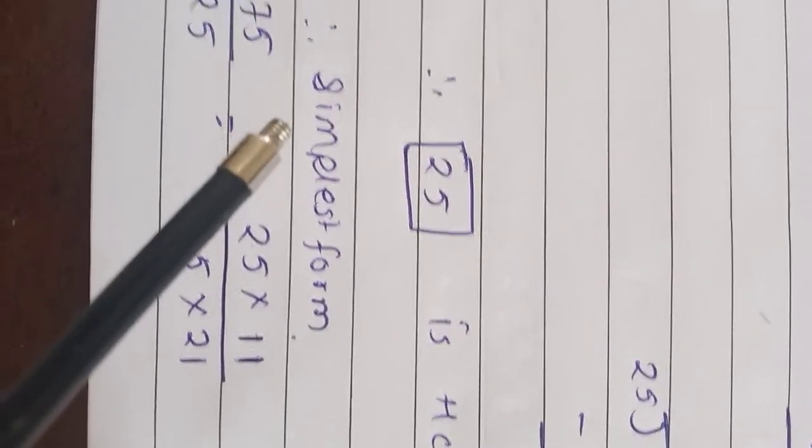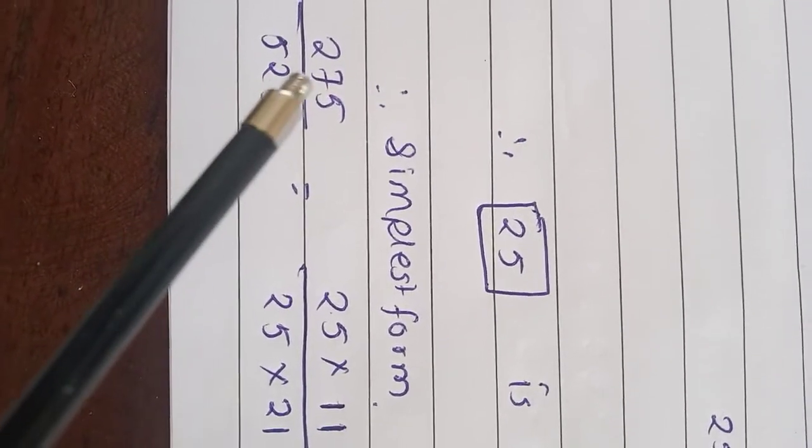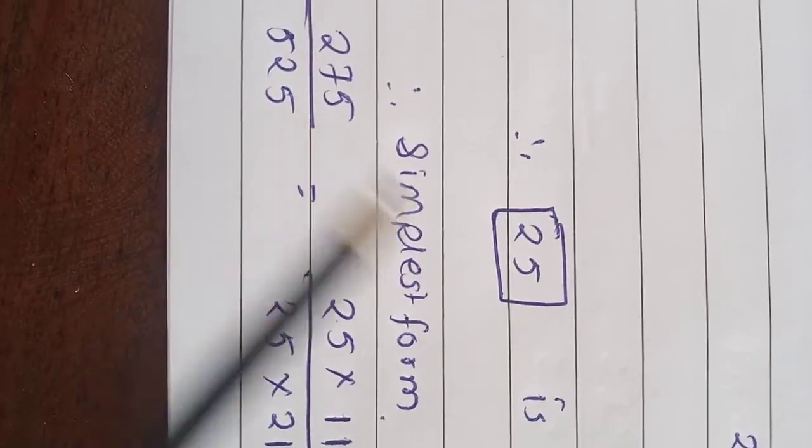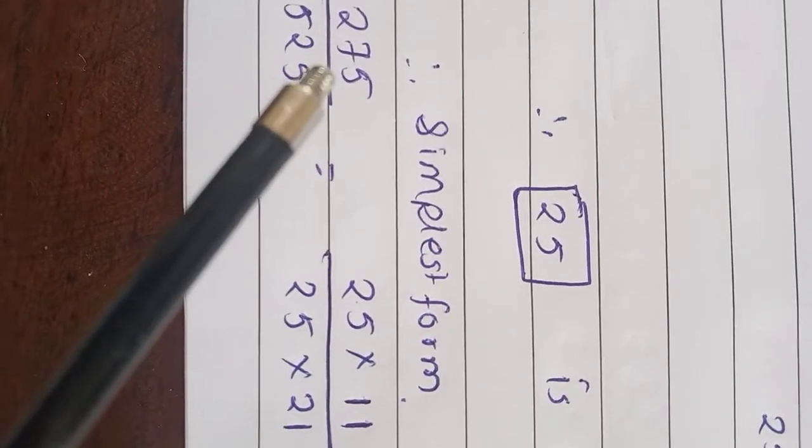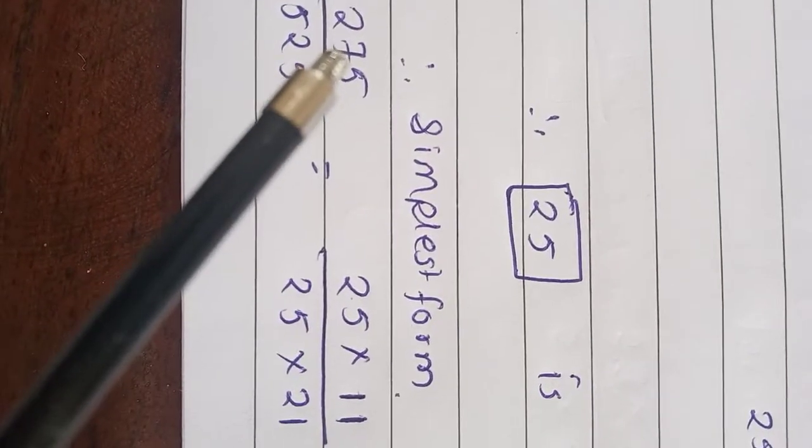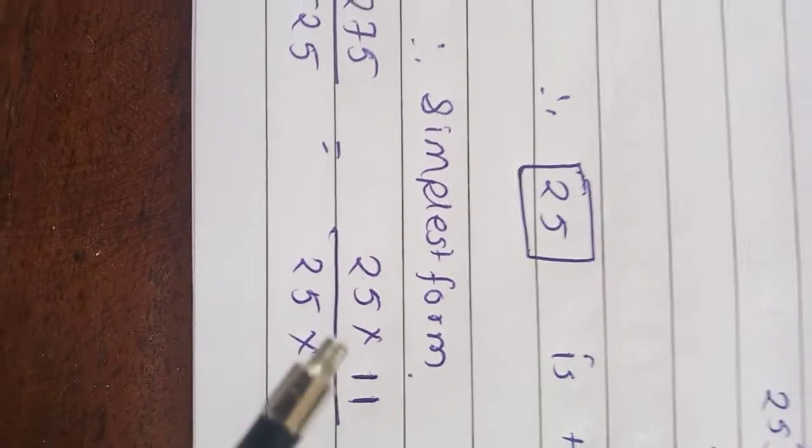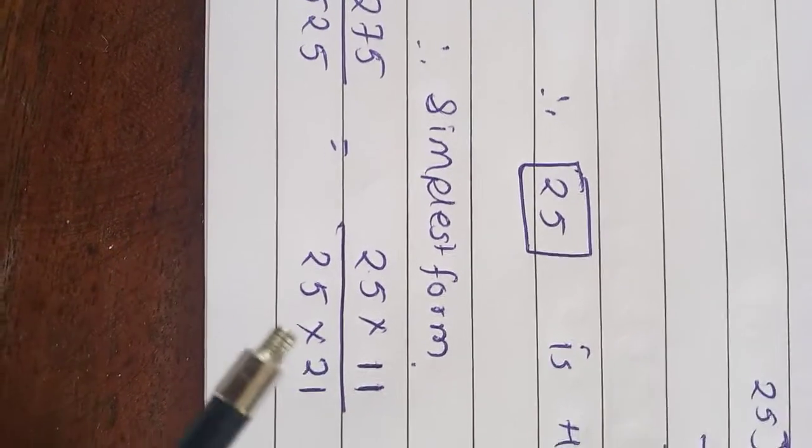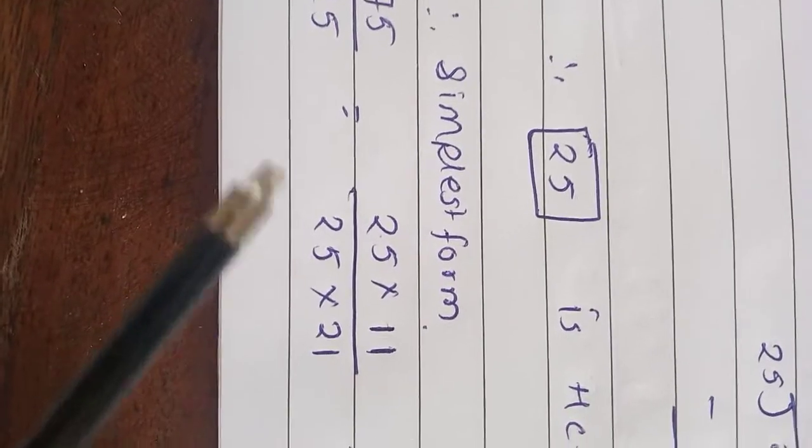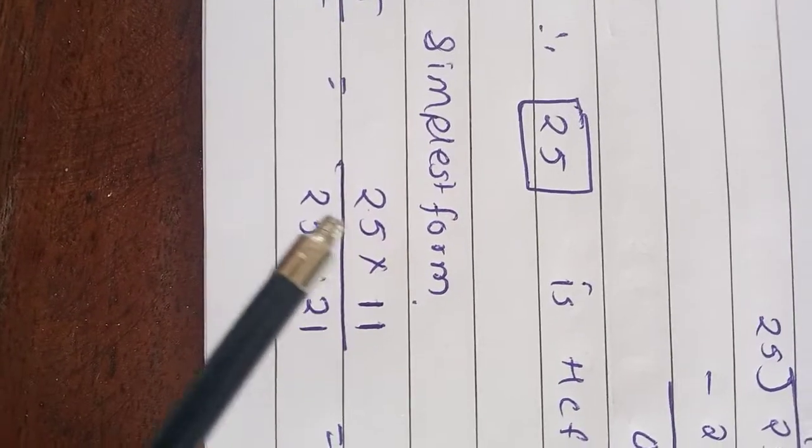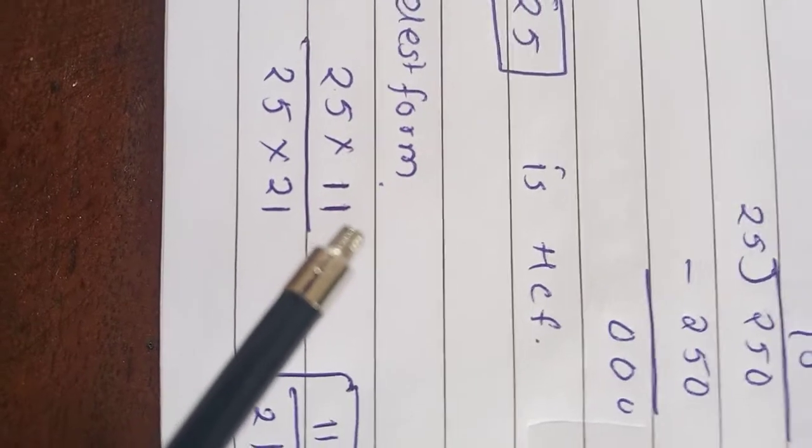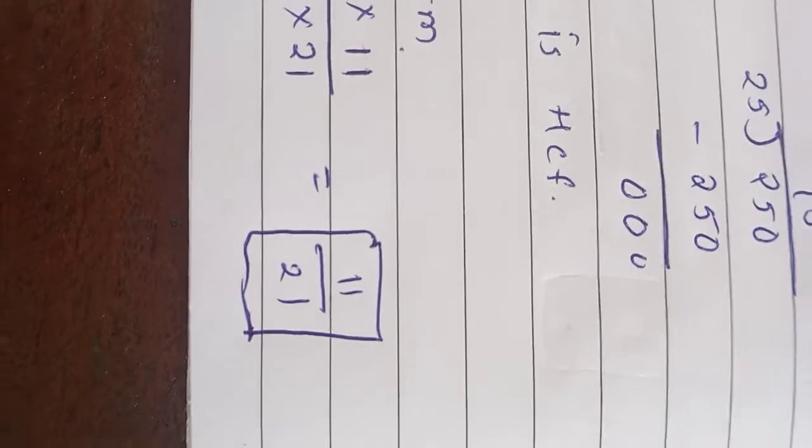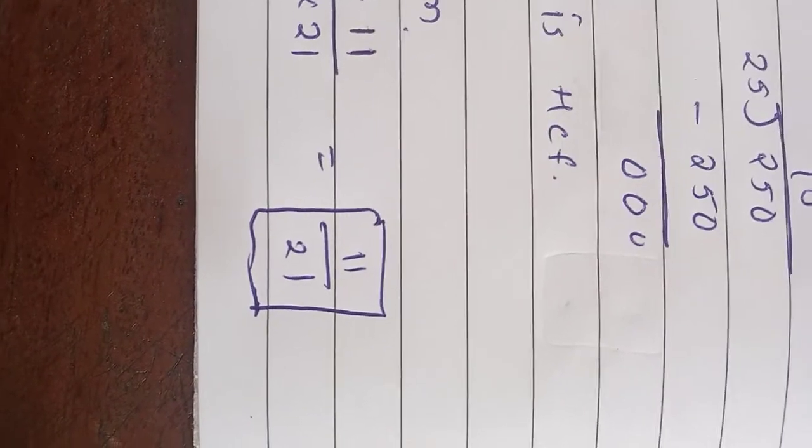Now we have to write these numbers in simplest form. Means in this 275 and 525, we have which number is common? That is the HCF. So 25 is common. So I am dividing 275 by 25. So 25 into 11 is 275. And 525, 25 into 21 is 525. Here 25 get cancelled. And what is the remainder? 11 upon 21. So simplest form is 11 upon 21.